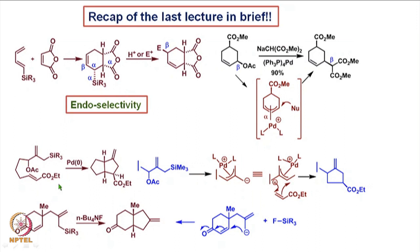We also looked at the allyl palladium complex based chemistry, in which we took an example with an allyl acetate moiety and allyl silane moiety embedded along with an alpha-beta unsaturated ester moiety. When palladium(0) was reacted with this, we saw the formation of a bicyclic molecule. We discussed in detail how this allyl acetate and allyl silane containing compound forms a kind of 1,3-dipole, guided by the formation of the allyl palladium complex. The leaving group that comes out cleaves the carbon-silicon bond to make an anion, and such a dipole then interacts with the alpha-beta unsaturated system to allow a 2+3 cycloaddition to form this kind of cyclopentane molecule.